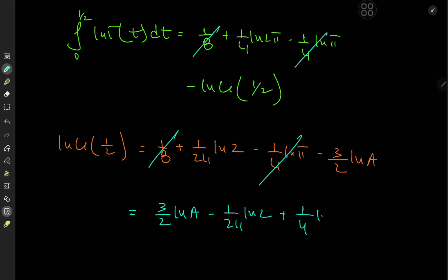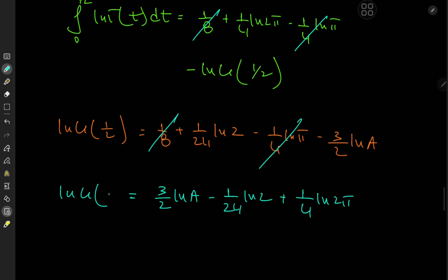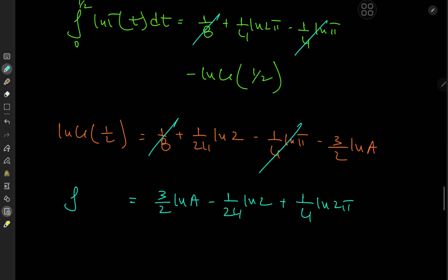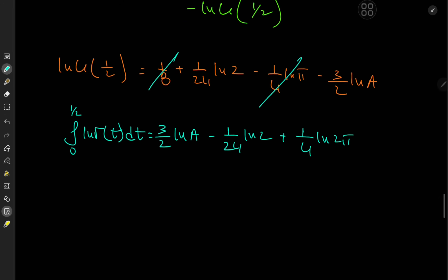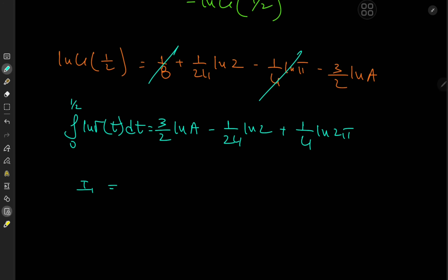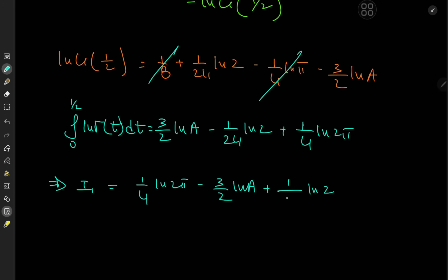So we still have (1/4)·log(2π). After cancellations we are left with I₂ = (1/2)·log(2π) − [(1/4)·log(2π) − (3/2)·log A + (1/24)·log 2] = (1/4)·log(2π) + (3/2)·log A − (1/24)·log 2.